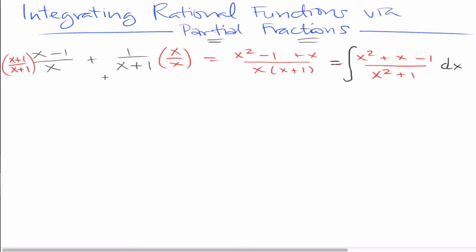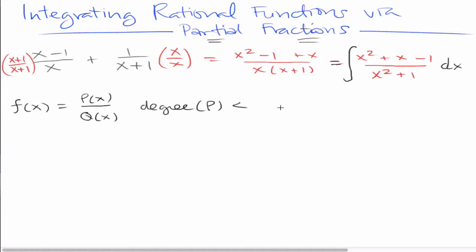The standard form for the rational expression f of x is as a polynomial p of x over a polynomial q of x, where the degree of p is less than the degree of q. Now, if this is not the case, then we'll use long division to put it into standard form.